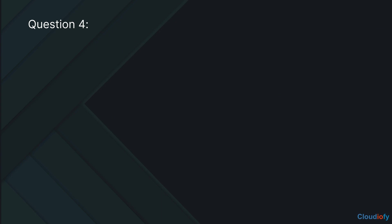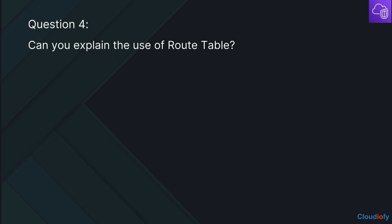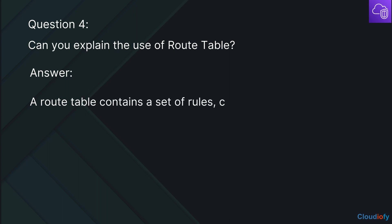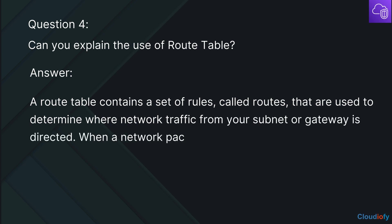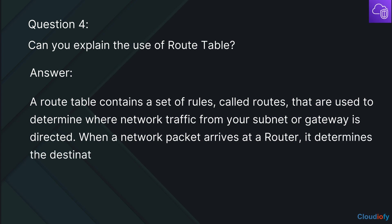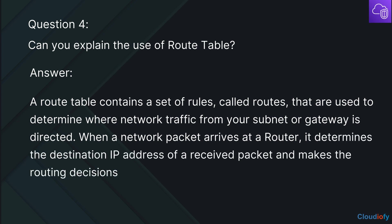The next question is: Can you explain the use of a Route Table? A route table contains a set of rules, called routes, that are used to determine where network traffic from your subnet or gateway is directed. When a network packet arrives at a router, it determines the destination IP address of the received packet and makes routing decisions to send the packet to its destination.